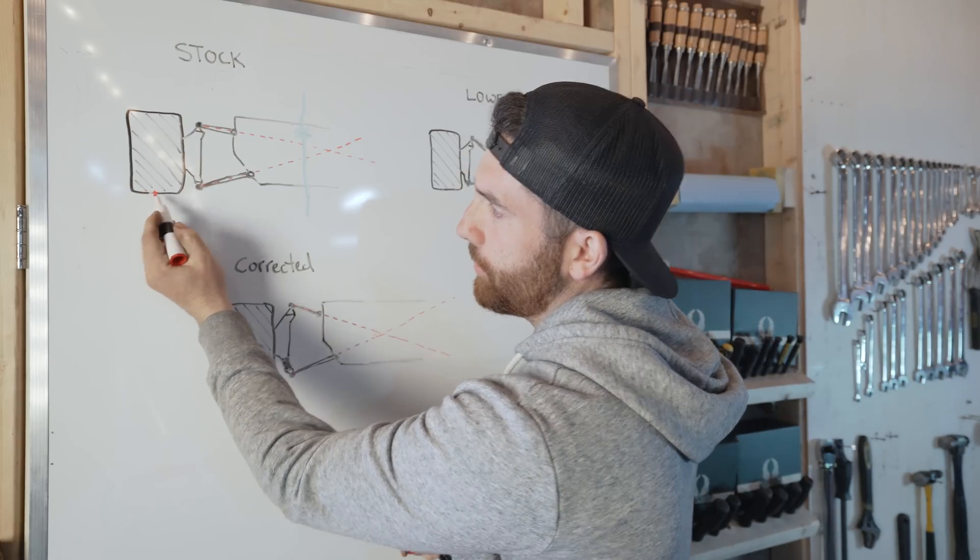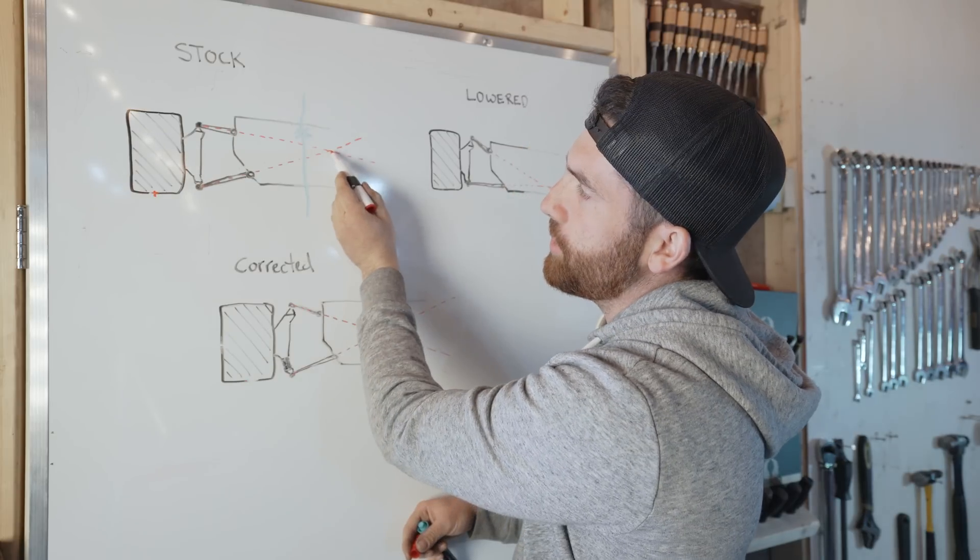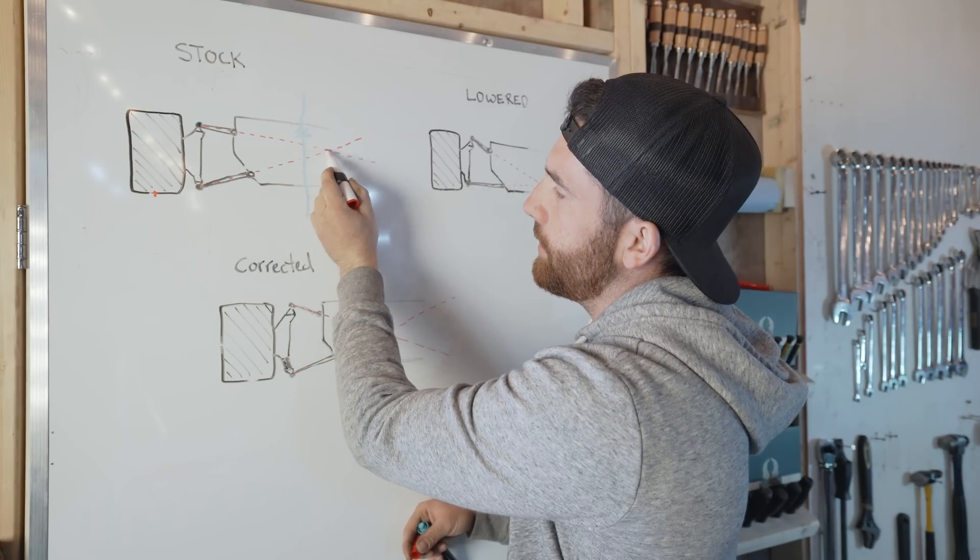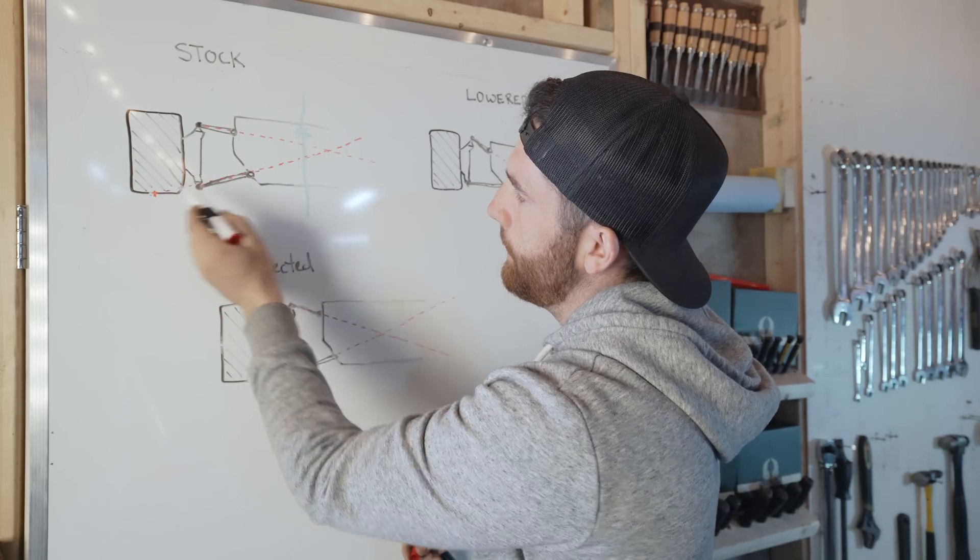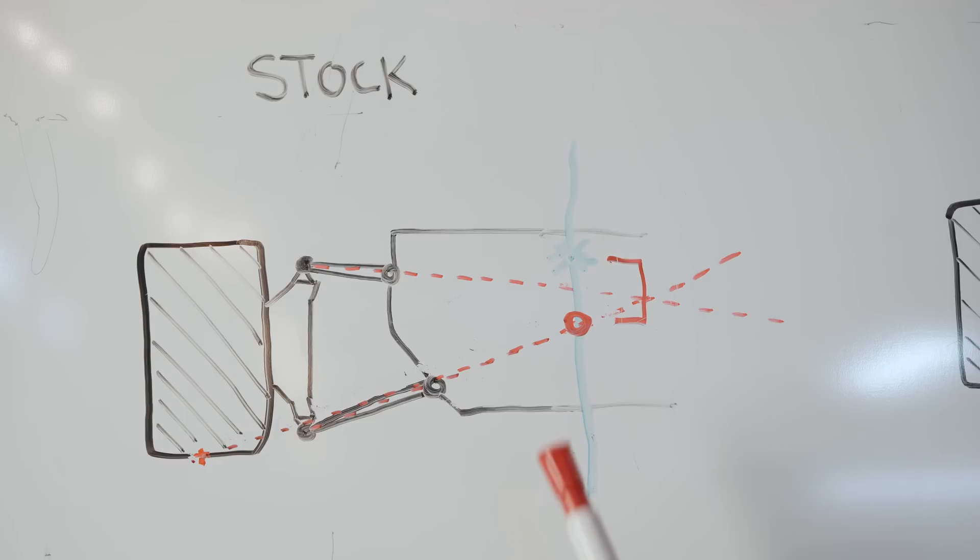Now the center of gravity changes throughout the car, but for demonstration purposes we'll say it's right here. Now what you do to find your roll center is you take a line and you draw it from the center line of the tire right here to the point at which these two lines meet.